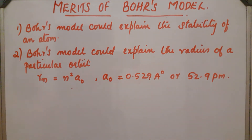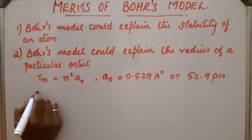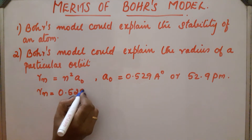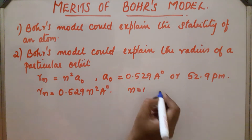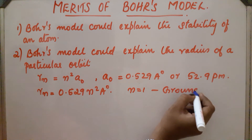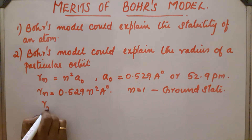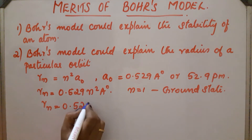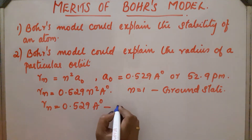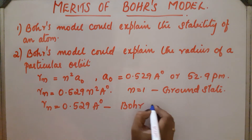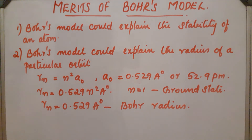So, if we know N — which orbit the electron is in — we can easily calculate the radius of that particular orbit. We can say Rn is equal to 0.529 N² Angstrom. If N is equal to 1, that means the electron is in the ground state, and Rn will be 0.529 Angstrom. This is the radius of the first orbit and is called the Bohr radius.